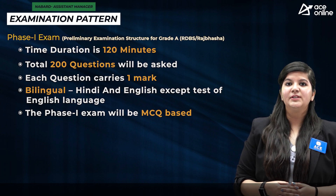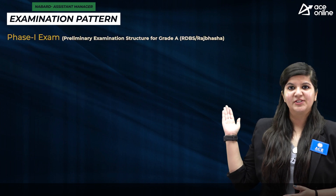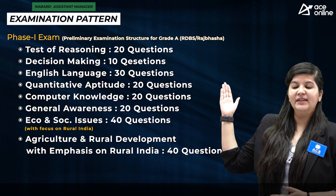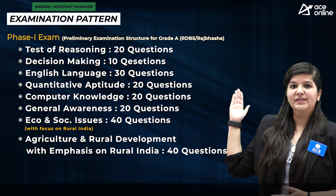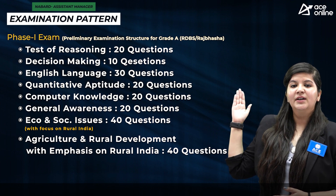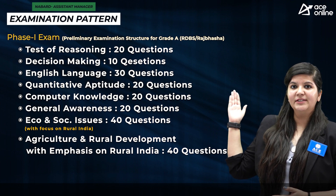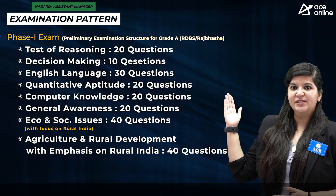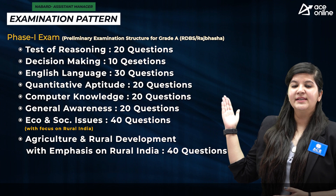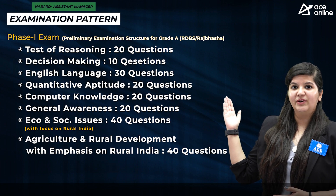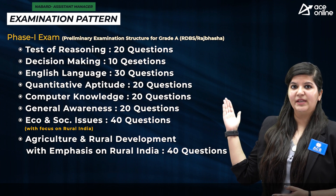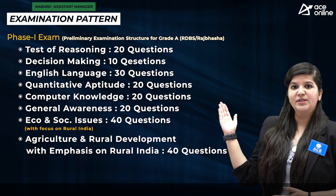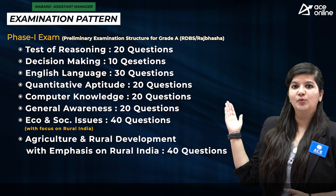There will be multiple choice questions from the above-mentioned sections: 20 questions from Reasoning, 10 from Decision Making, 30 from English, 20 from Quantitative Aptitude, 20 from Computer Awareness, 20 from General Awareness, 40 from Economic and Social Issues, and 40 from Agriculture and Rural Development.